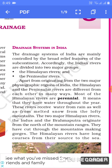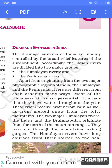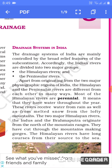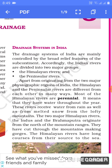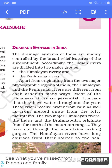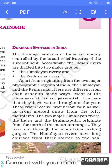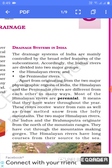Most of the Himalayan rivers are perennial — it means that they have water throughout the year. Himalayan se nikalne wali rivers mein varsh bhar paani hota hai. These rivers receive water from rain as well as from melted snow from the lofty mountains. The two major Himalayan rivers, the Indus and the Brahmaputra, originate from the north of the mountain range and have cut through the mountains making gorges.